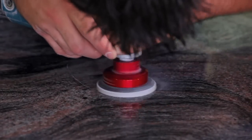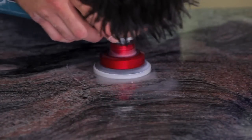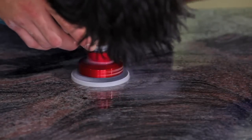With each progressive grit the time needed will be less and less. You are simply removing the scratches from the previous grit pad and as you move up you will have less and less slurry.